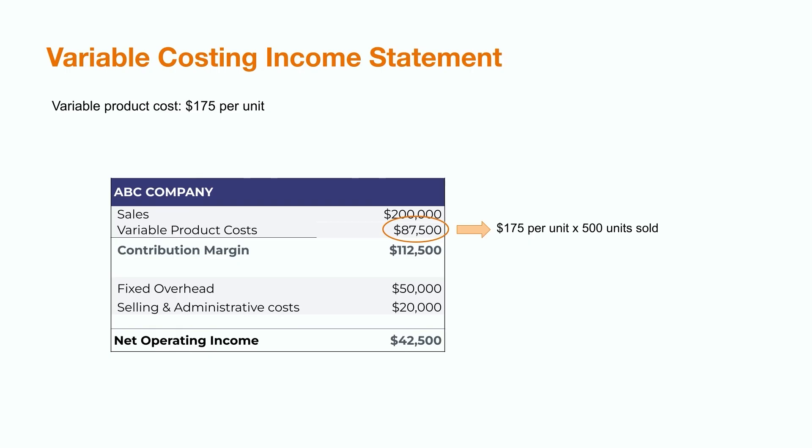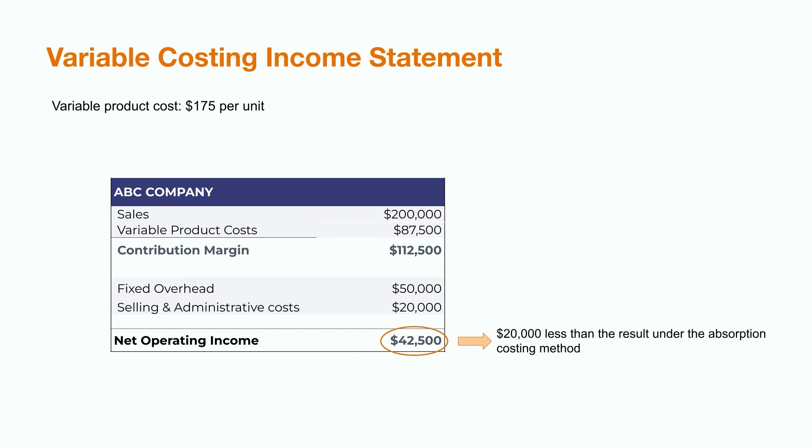Let's do this again using the variable costing approach. The per unit variable product cost was $175 per unit. Multiplying by 500 units sold gives us total variable product costs of $87,500. Subtracting that from revenue of $200,000 gives us a contribution margin of $112,500. The contribution margin is higher than the gross margin in the previous example because the fixed overhead costs have not been factored into the product costs. However, the next step would be to subtract out both the $20,000 fixed selling and administrative costs, and all the fixed overhead costs for the period, which were $50,000. This results in a total operating income of $42,500, which is $20,000 less than the result under the absorption costing method.